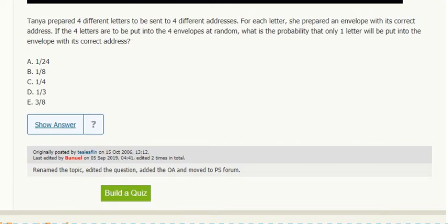So Tanya's going to do four letters to four addresses. Let's visualize it. So let's say this is the envelope one goes to the correct one and the others are not correct.